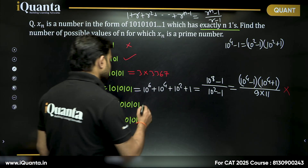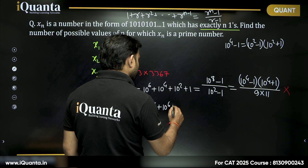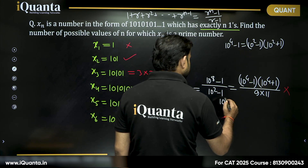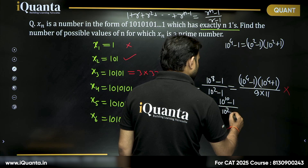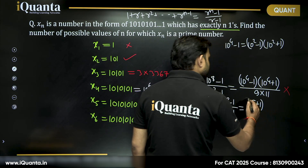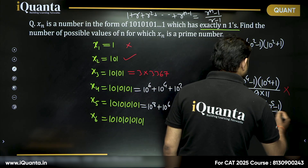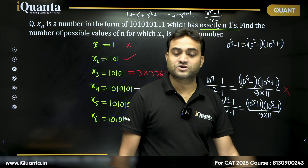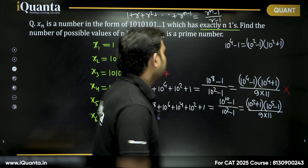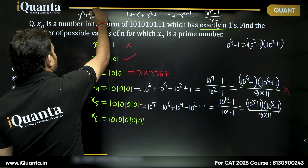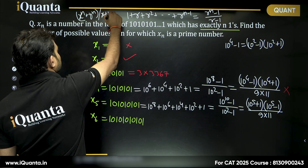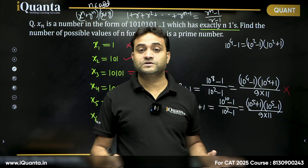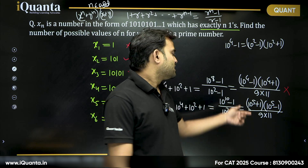Similarly, if I take x_6, I can write it as 10^8 + 10^6 + 10^4 + 10^2 + 1, which equals (10^10 - 1) / (10^2 - 1). This can be written as (10^5 + 1)(10^5 - 1) divided by 9 times 11. If we check 10^5 + 1, we know that x^n + y^n is always divisible by x + y when n is odd. So 10^5 + 1 will always be divisible by 10 + 1 = 11.